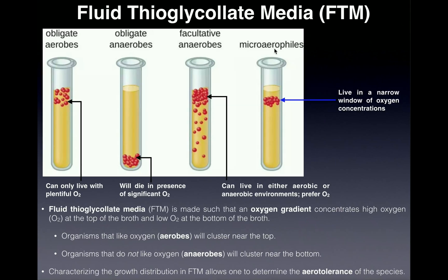The last type we'll cover is microaerophiles. Micro means small, and aerophile means it likes oxygen. These organisms don't grow right at the very top like obligate aerobes — they'll be a little bit down but still in the aerobic area. They live in a narrow window of oxygen concentrations, slightly less than the maximum in the tube, appearing as a thin band. There will be none of them in the anaerobic regions.